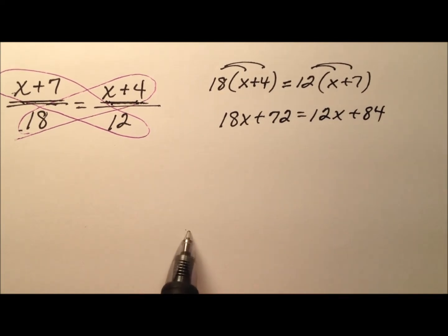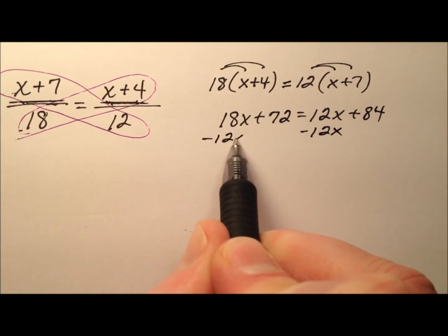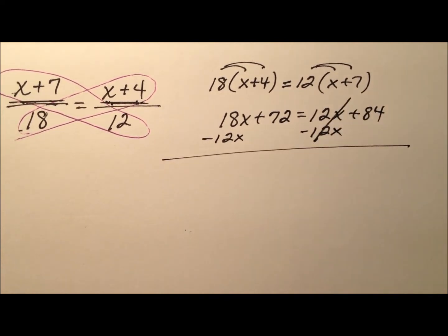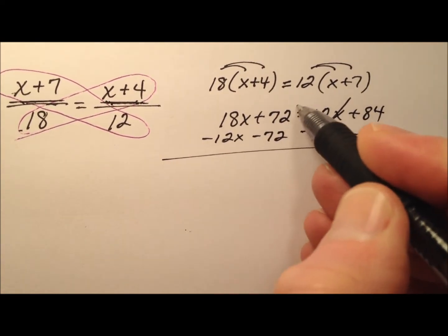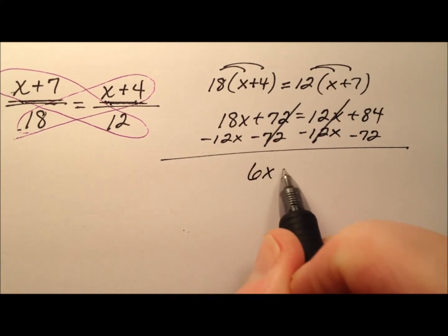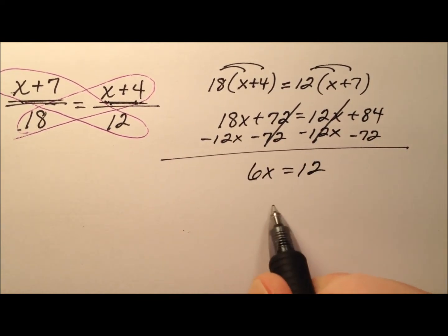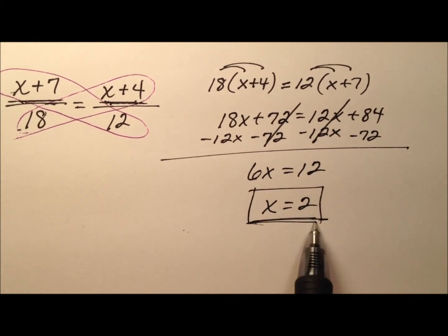Alright, so let's get our x's on one side and our constants on the other side. We can do that by subtracting 12x from both sides, because those will cancel. And then subtracting 72 from both sides, because those will cancel. So it looks like 6x equals 12, x equals 2, and that will be our solution.